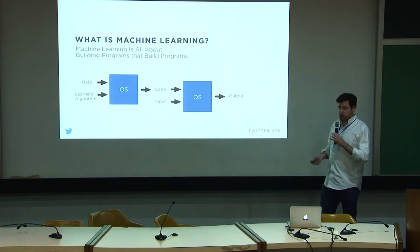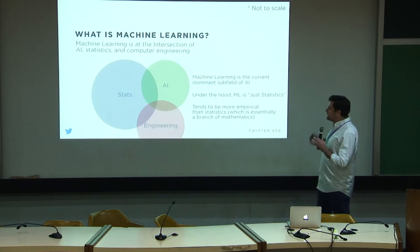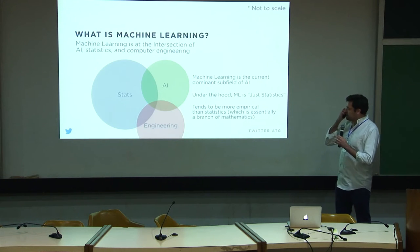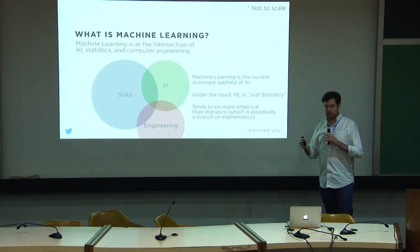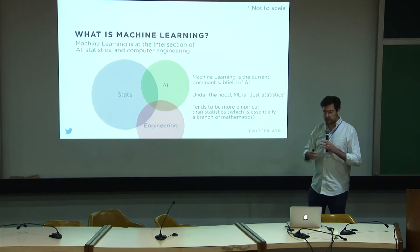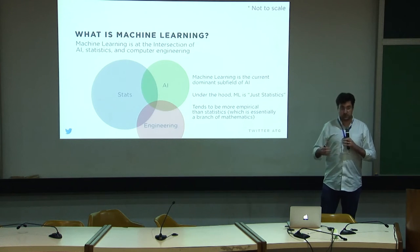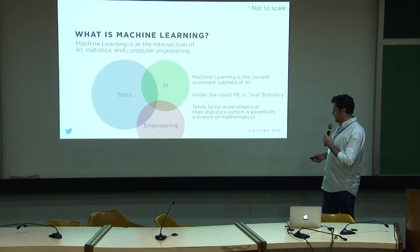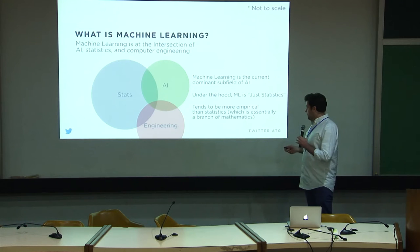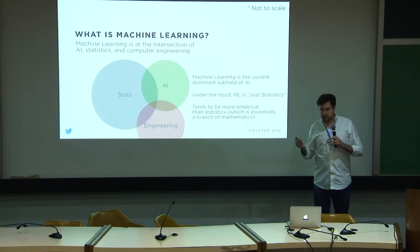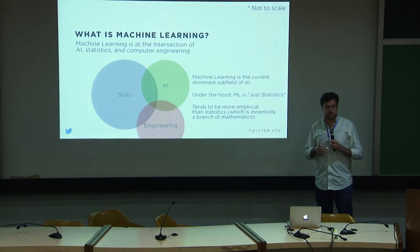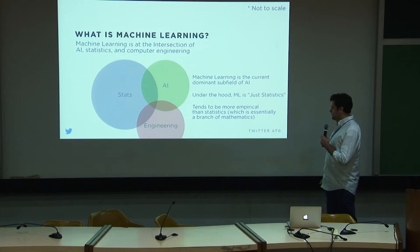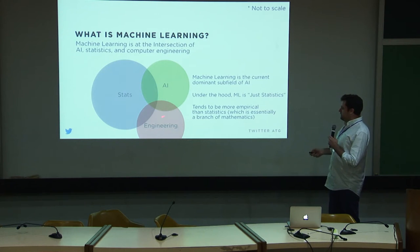Machine learning is all about building programs that build programs. It sits at the intersection of artificial intelligence — some people think ML and AI are synonymous, but AI is an older field — statistics, and computer engineering. Machine learning is currently the dominant subfield of AI. People from statistics say that under the hood machine learning is really just statistics, which is largely true, but machine learning tends to be more empirically focused, whereas statistics is a branch of applied mathematics.